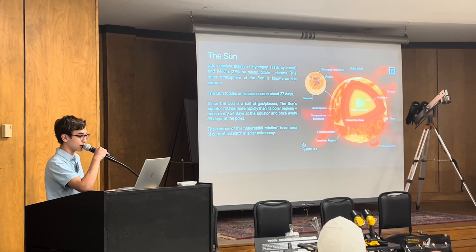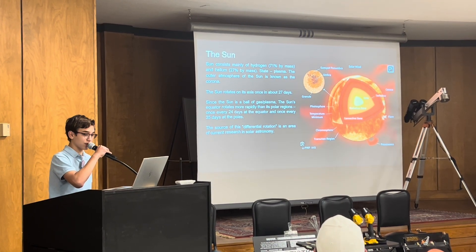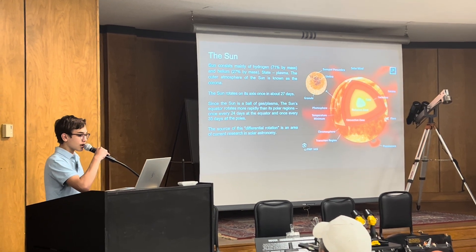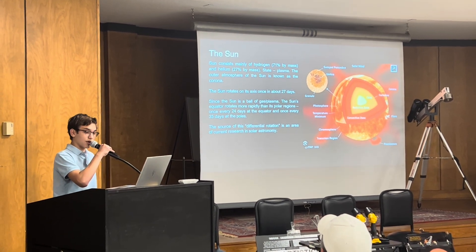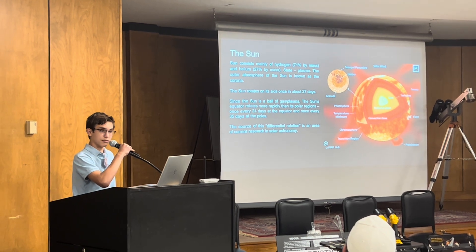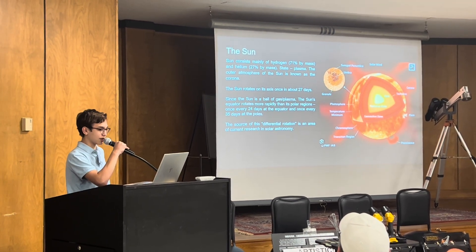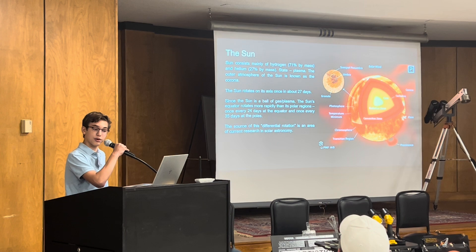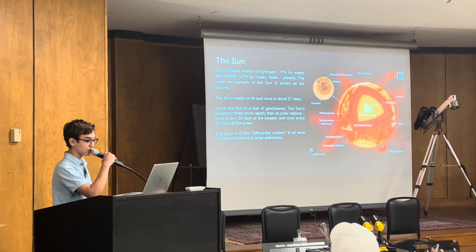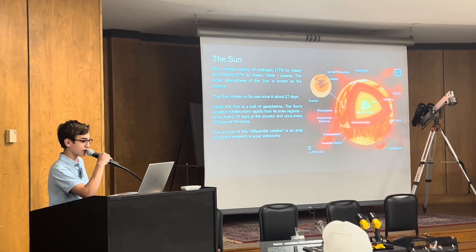However, the corona can be viewed during a total solar eclipse. The vast amounts of energy emitted by the sun come from thermonuclear fusion reactions occurring within the core that convert hydrogen to helium. It has been calculated that the energy output of the sun is 3.86 times 10 to the 23rd kilojoules per second. That's a lot of energy.